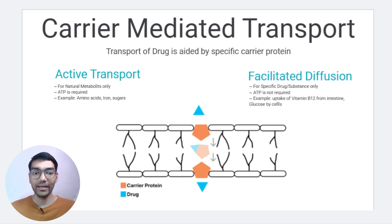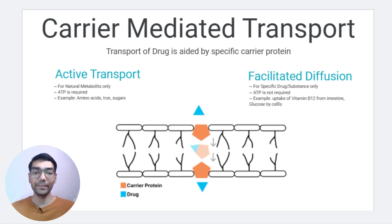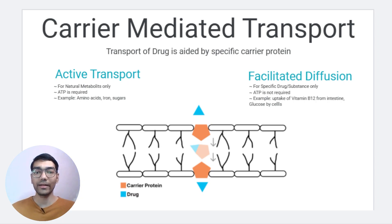In facilitated diffusion, the carrier protein does not require any energy for transport. The transport occurs in the direction of the concentration gradient — from high to low — so ATP is not required and it is energy independent. The carrier protein is highly specific, meaning the binding site on the carrier protein is specifically designed to bind with a particular drug or chemical substance.